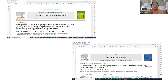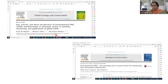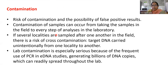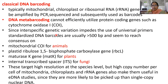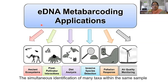Two key references for this presentation are from Global Ecology and Conservation and Biological Conservation. One is a review paper on past, present, and future perspectives of environmental DNA metabarcoding, and the other is on eDNA as an emerging tool in conservation monitoring of past and present biodiversity. In summary, eDNA allows collection of environmental samples, isolation and amplification of total DNA, sequencing, and matching with databases to identify species present and their abundance. These are some of the applications of eDNA metabarcoding.